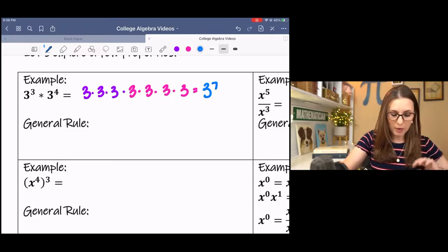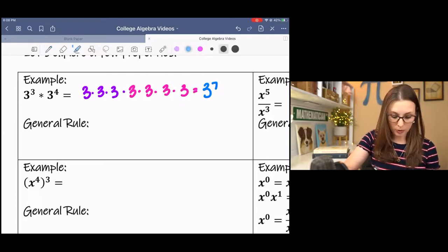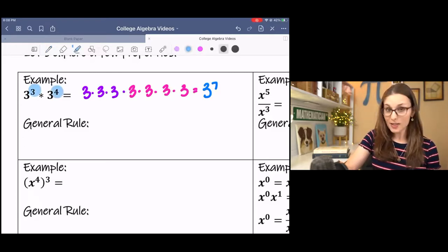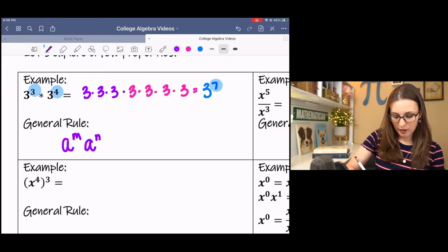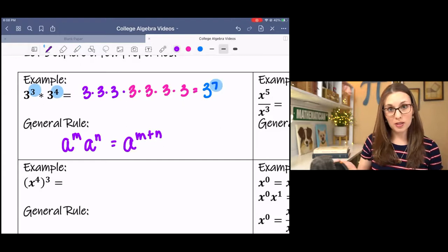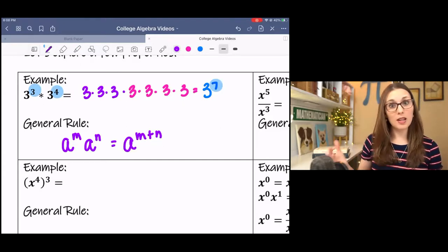Now, if I look back at my original exponents, 3 plus 4 is 7. So when we have the same base and we're multiplying, we can actually add exponents. So multiplication means add.